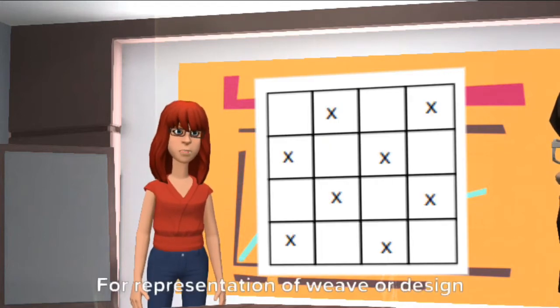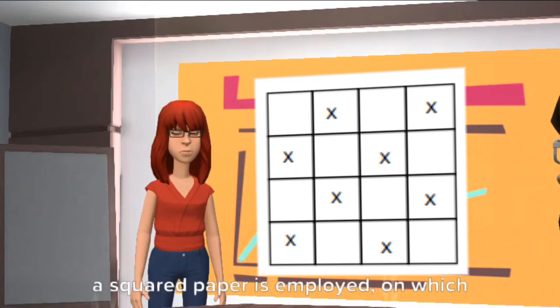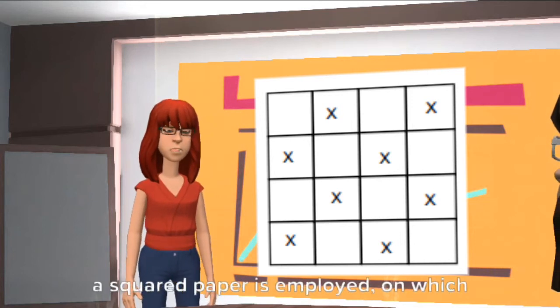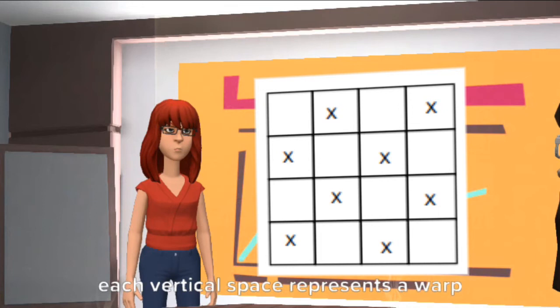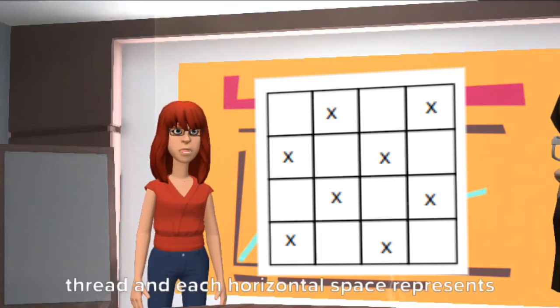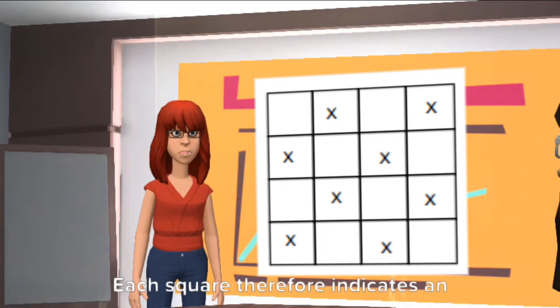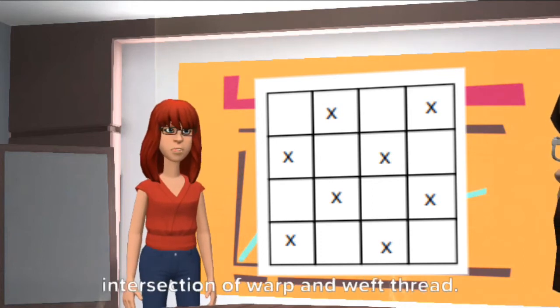For representation of weave or design, a square paper is employed on which each vertical space represents a warp thread and each horizontal space represents a weft thread. Each square therefore indicates an intersection of warp and weft thread.